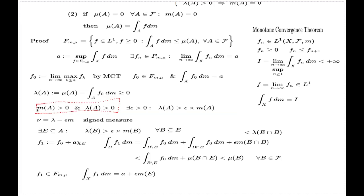So this assumption cannot be made — either m of A or lambda of A must be zero. That's why measure m and lambda are mutually disjoint, and it finishes the proof of the decomposition theorem and, by implication, the theorem of Radon and Nikodym.